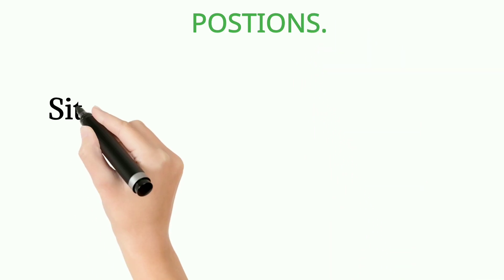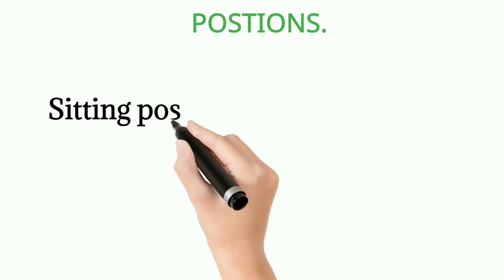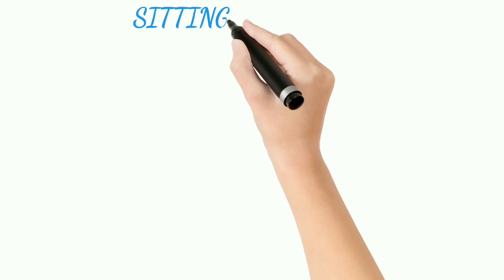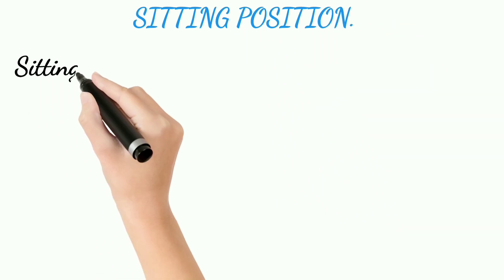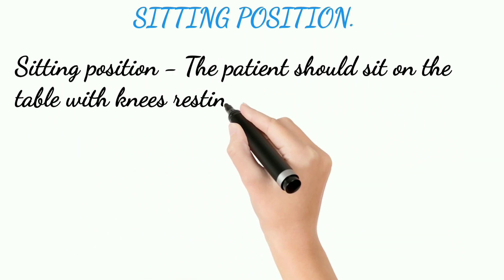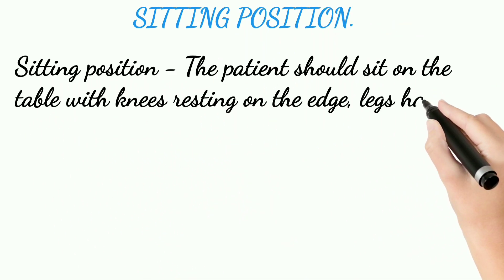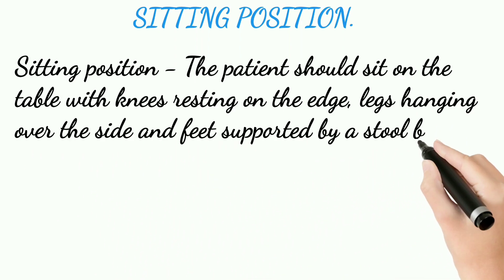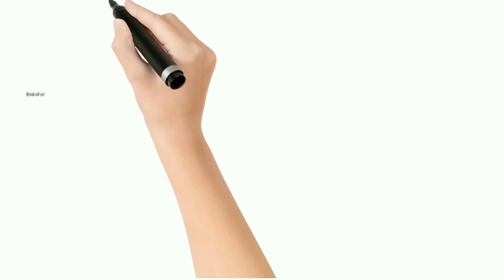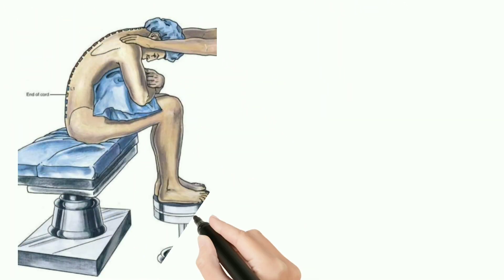Patient positioning for spinal anesthesia. Position 1: sitting position. The patient sits on the table with knees resting on the edge, legs hanging over the side, and feet supported on a footstool. The patient bends forward with a pillow held to the chest.